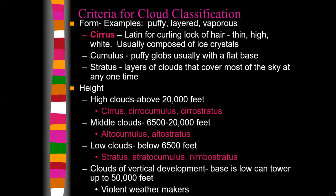Low clouds are below 6,500 feet and include stratus, stratocumulus, and nimbostratus. Anything with 'nimbo' in the name is a precipitation maker — a nimbostratus cloud is a stratus cloud with rain coming from it. Then there are clouds of vertical development: the base is low but these things can tower up to the bottom of the stratosphere. If there's enough energy — meaning condensation — they can poke through into the stratosphere. Look out when that happens — a massive thunderstorm or maybe a tornado.